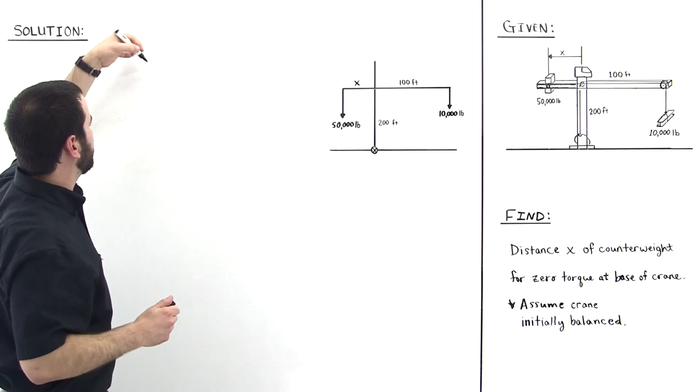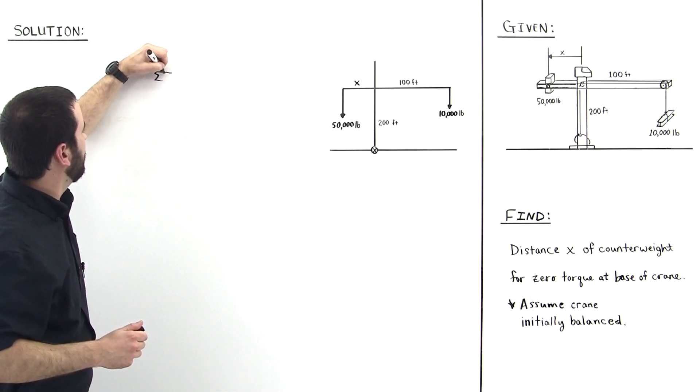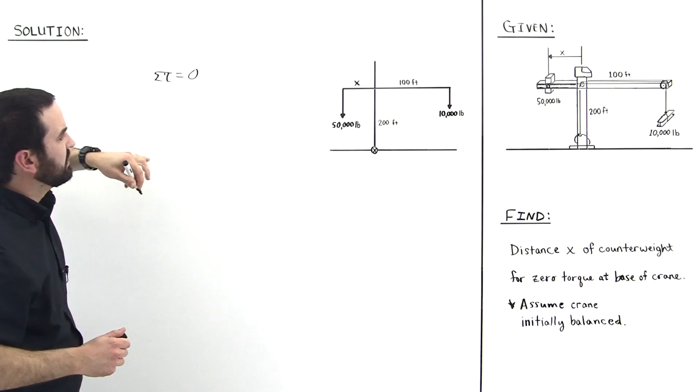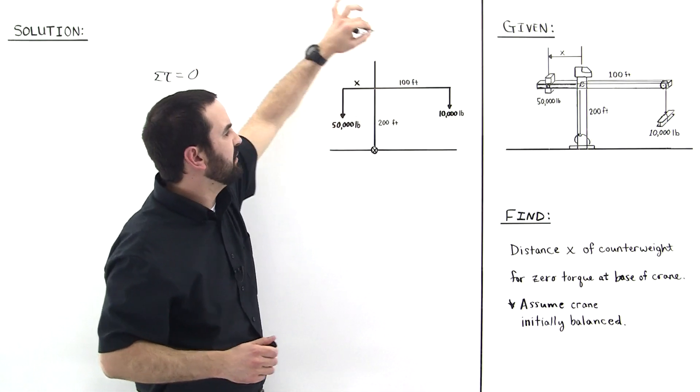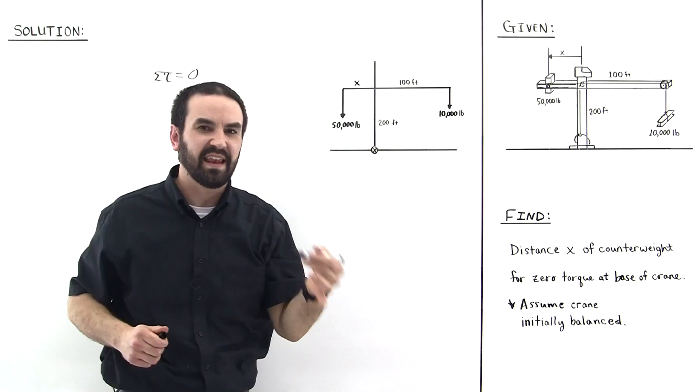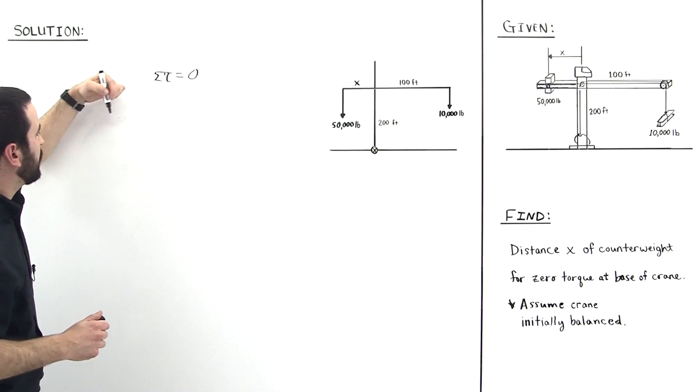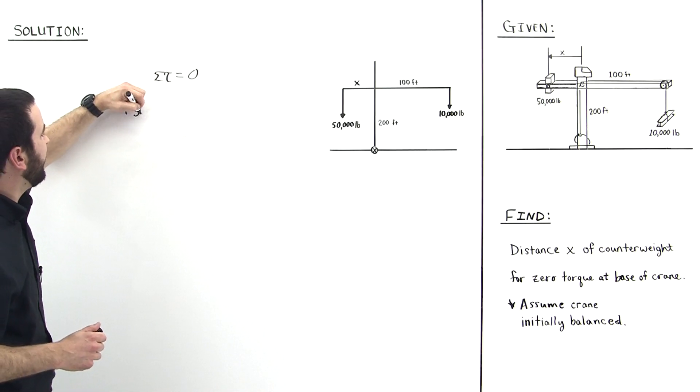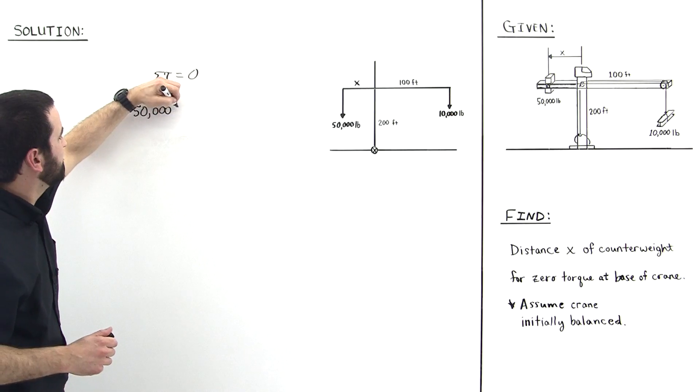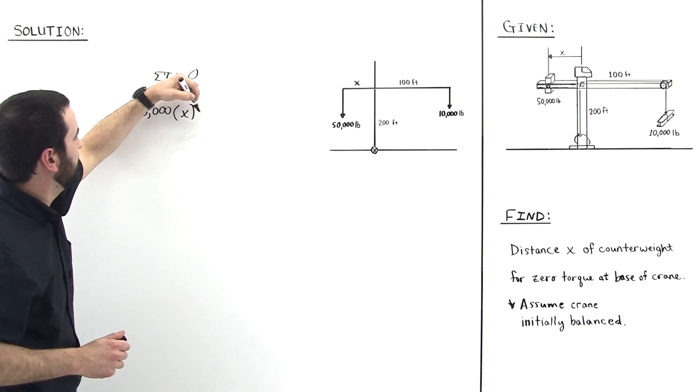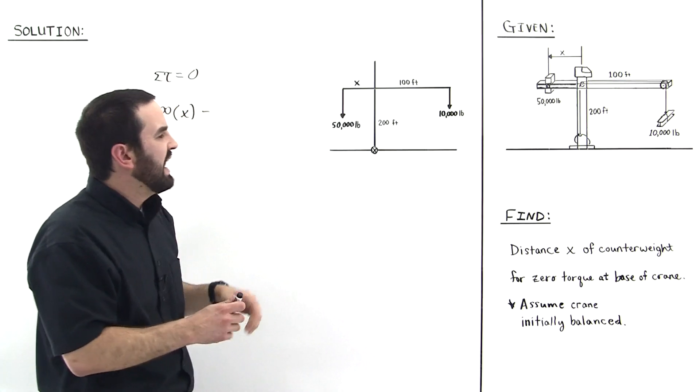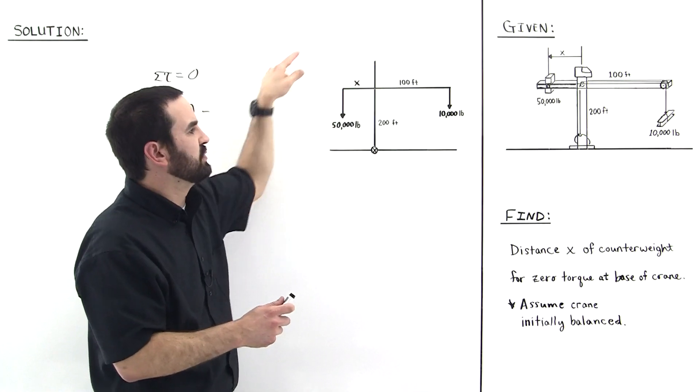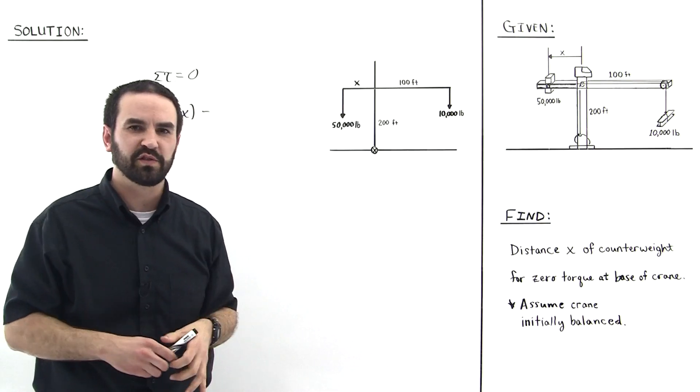So we say the sum of the torques are equal to zero, sigma tau. So the 50,000 pound weight has a tendency to cause counterclockwise rotation, so we say that is a positive torque by convention. Torque equals force times distance, so we have positive 50,000 times x minus—minus because this 10,000 pound weight here has a tendency to cause clockwise rotation, and by convention we call those negative torques.